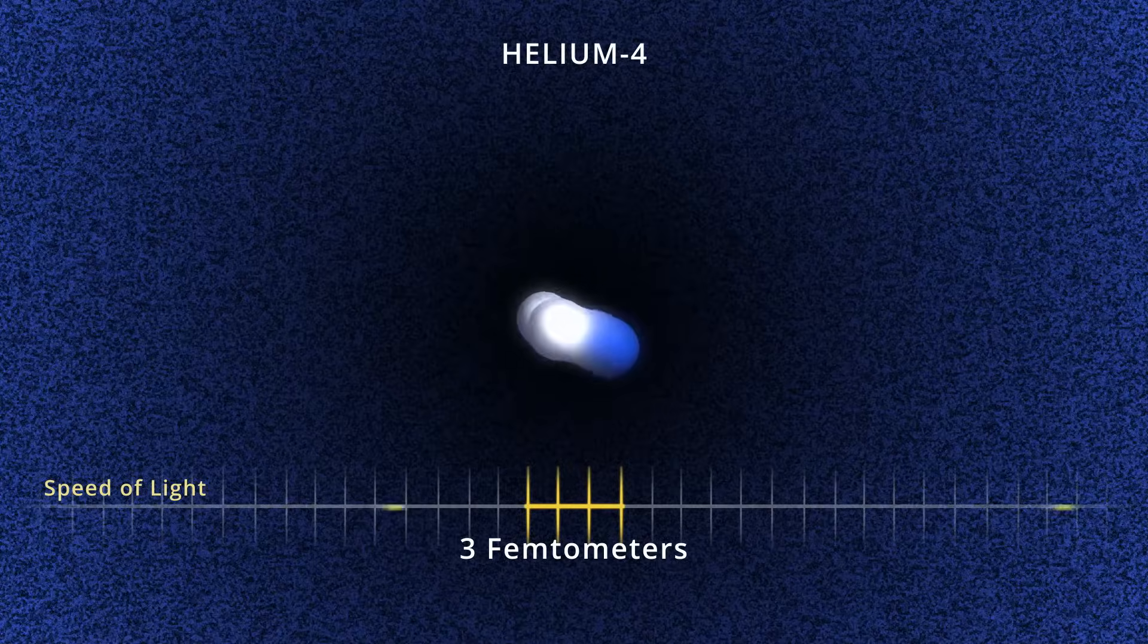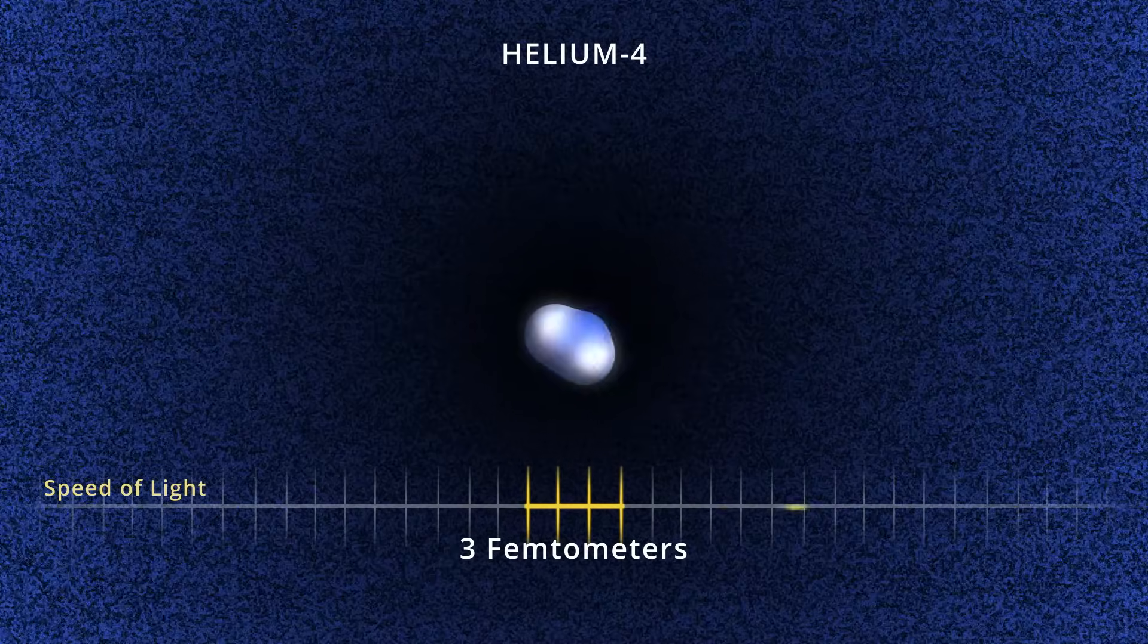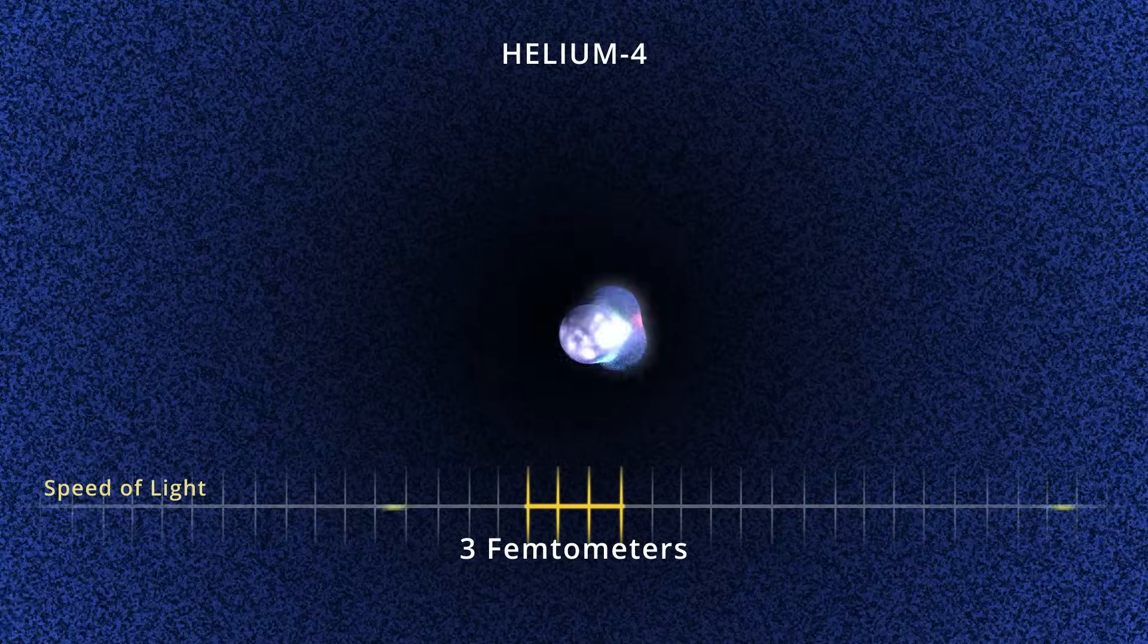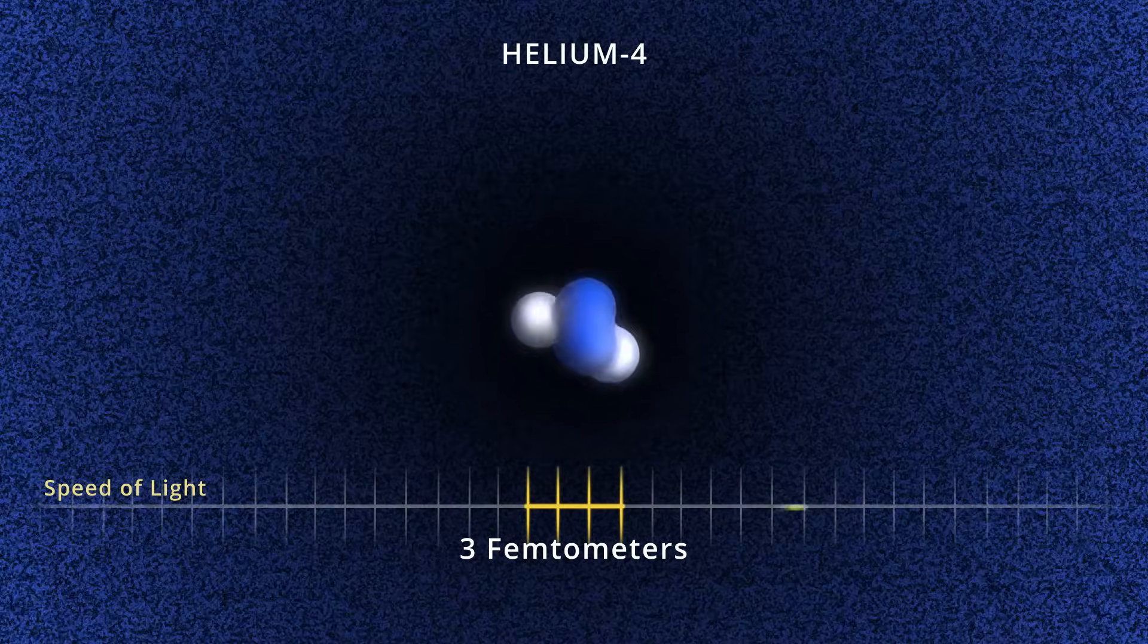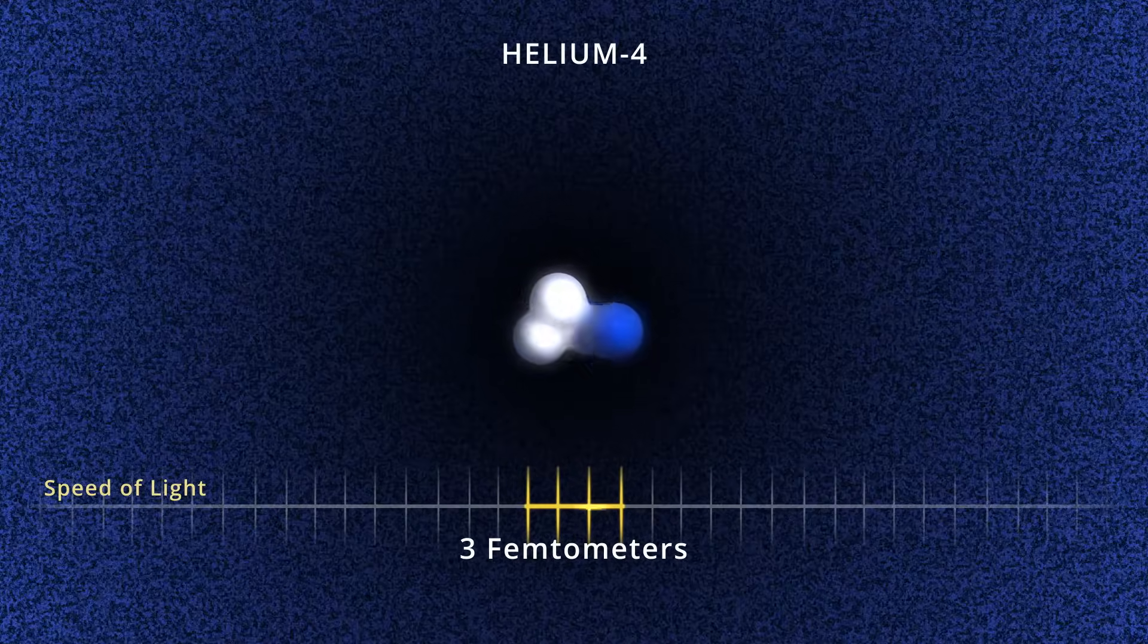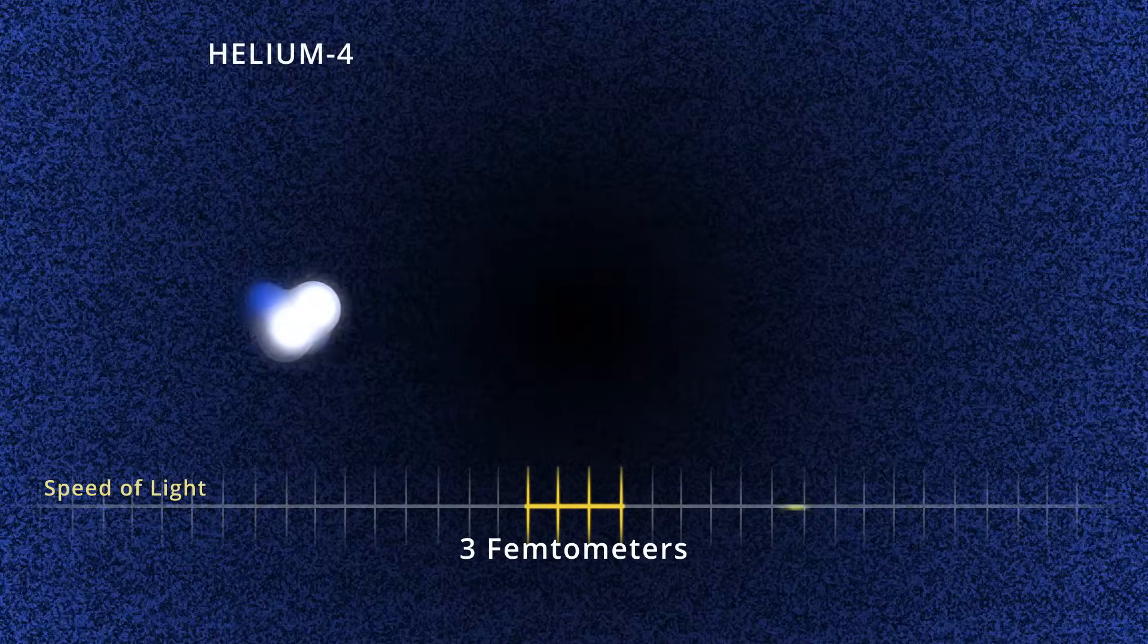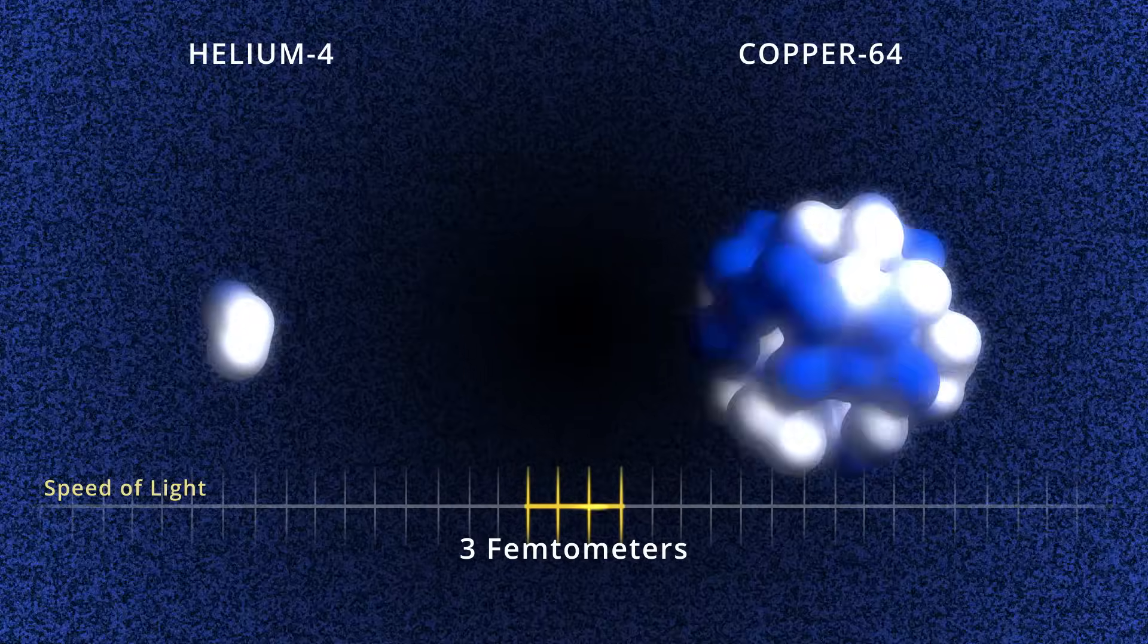Shown here is helium-4, the most abundant multi-nucleon system. When peering inside the protons and neutrons, the quarks and gluons move with the speed of light. It would take a proton about 3 baby seconds to traverse a helium-4 nucleus, and for larger nucleus, like copper-64, about 10 baby seconds.